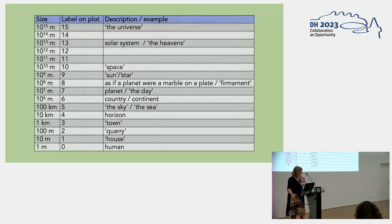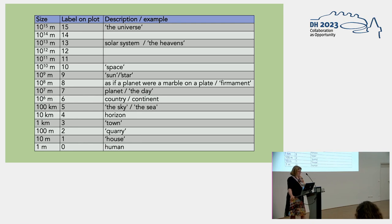Going up the scale, we move from towns and seas up to much less easily measured things like the firmament and the heavens. The universe is of course much bigger than 10 to the power of 15 meters, but had I put in an even remotely accurate number this would have made it impossible to see the variation at lower levels. So we can understand that highest category as roughly denoting the largest thing the poems ask the reader to imagine.